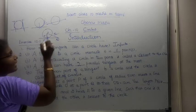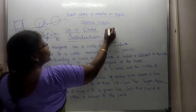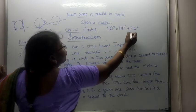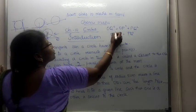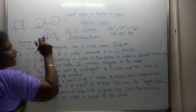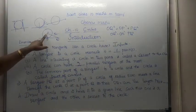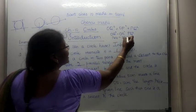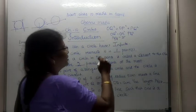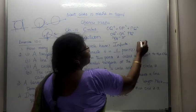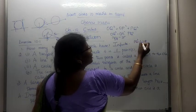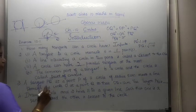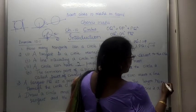Therefore, by the Pythagoras theorem: OQ squared equals OP squared plus PQ squared. So PQ squared equals OQ squared minus OP squared. OQ squared is 144 (12 squared) and OP squared is 25 (5 squared). Therefore PQ squared equals 144 minus 25, which equals 119. PQ equals root of 119. The answer for this question is root of 119.